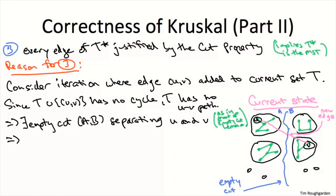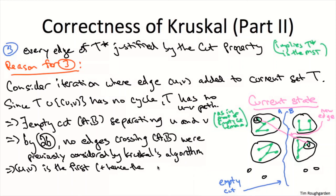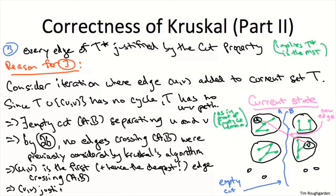Here's how we weave these strands together to complete the correctness proof. We're focusing on a single iteration where Kruskal is about to add edge U, V to capital T. We've exhibited a cut A, B such that no previously chosen edges cross it, making U, V the first chosen edge crossing this cut. Being the first edge seen crossing this cut means it is also the cheapest edge of the input graph crossing this cut — that is exactly the hypothesis of the cut property. That is why edge U, V in this arbitrary iteration is justified by the cut property, completing the proof.